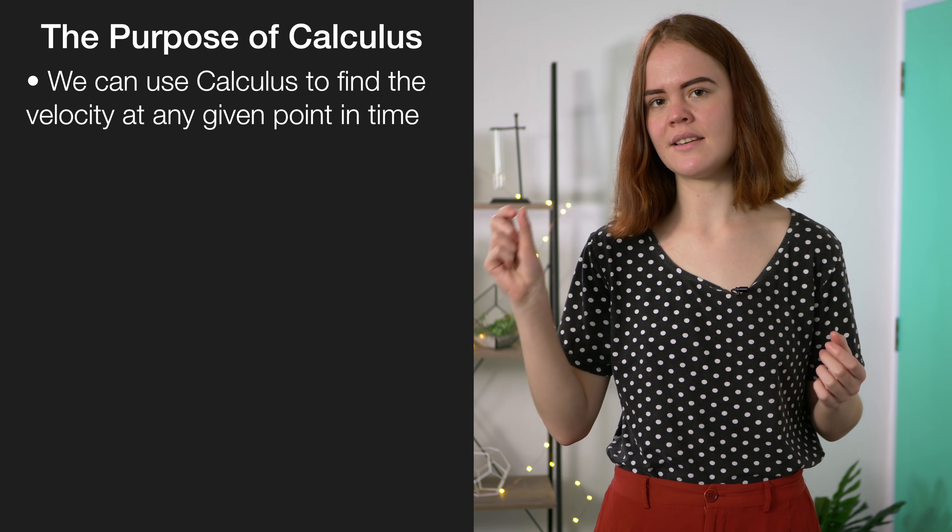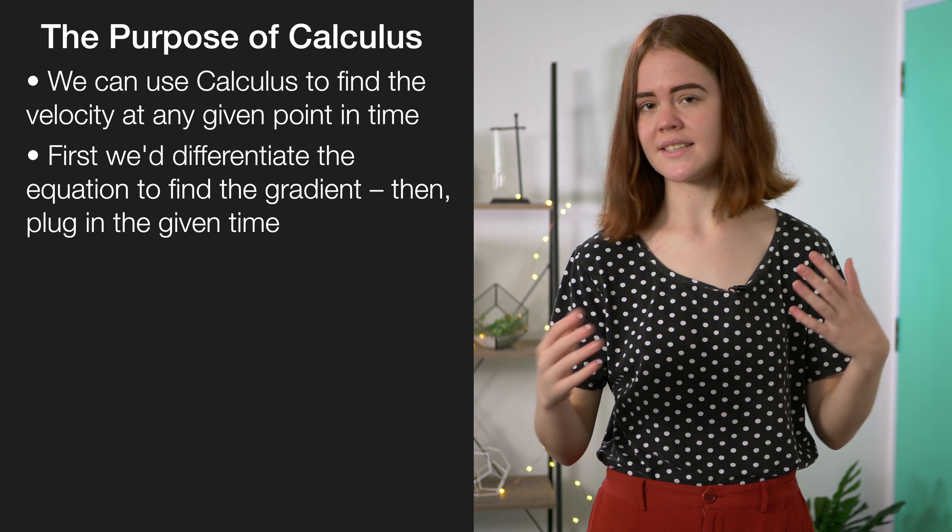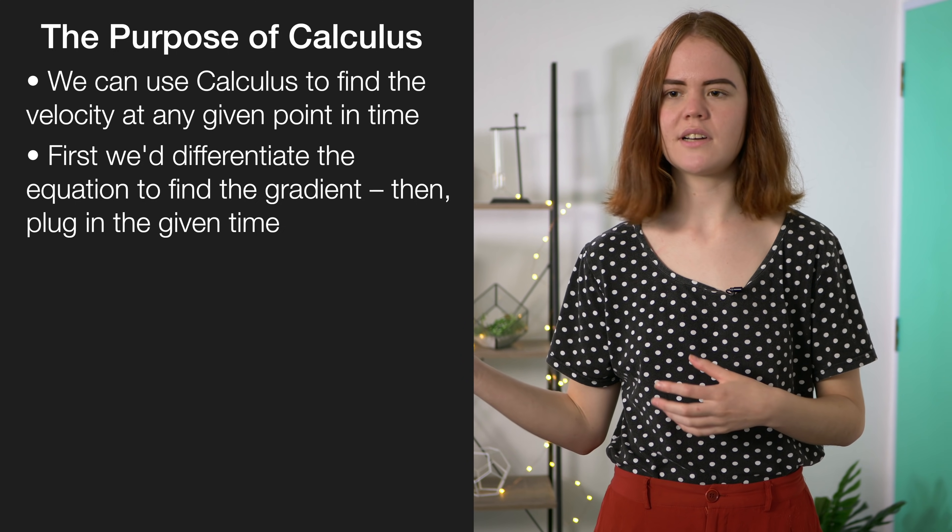But what happens when velocity isn't constant? Well, that's when we can use calculus to find what the velocity is at any particular instant in time. First, we just differentiate the equation to find the gradient, which is the same as the velocity. Then we plug in the given time to generate the velocity for any point on the motion graph.